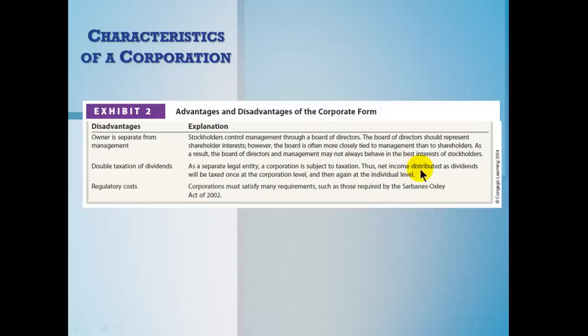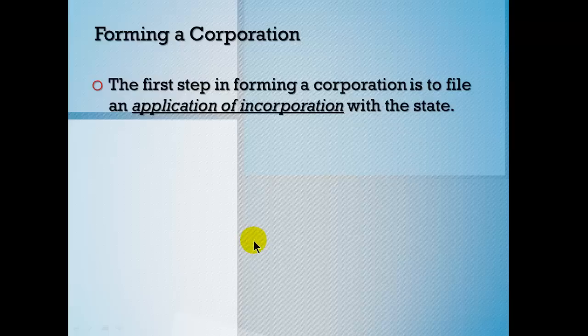The double taxation of dividends means the corporation pays tax on its income, and then when dividends are distributed, the individual shareholders pay taxes on that receipt as well. There are also significant regulatory costs. The Sarbanes-Oxley Act of 2002 was enacted as a result of corporate financial reporting scandals in the late 1990s and early 2000s. Many companies tried to go private to avoid its requirements because audit fees in some cases tripled, which was a pretty arduous burden.